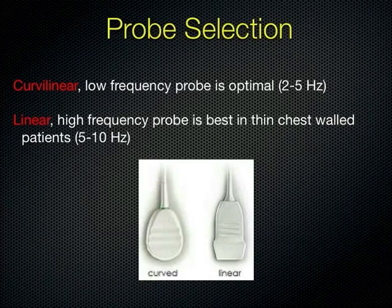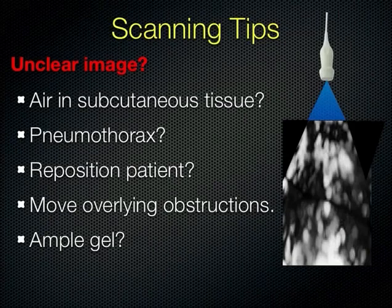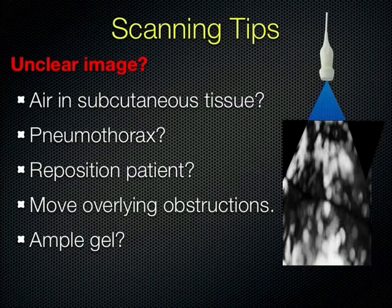A couple of quick tips for imaging: if you don't have a great picture, troubleshoot. Do you have enough gel? Air is your enemy, gel is your friend. If you don't have good contact with the chest wall, or something is obstructing the way — a bandage or a bra strap — clear those things. You may need to reposition the patient. Also consider whether the reason you can't see anything is because there's air in the tissues or a pneumothorax obliterating your image — that tells you something too.